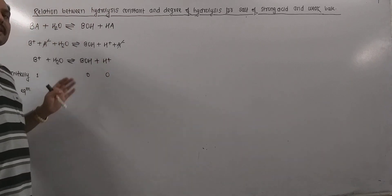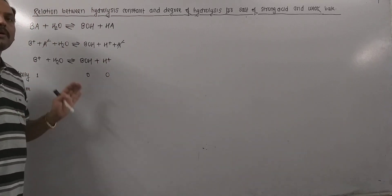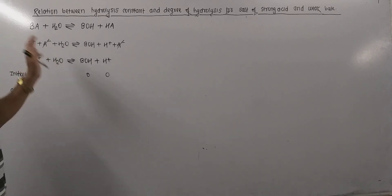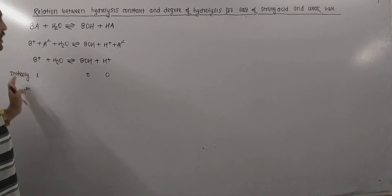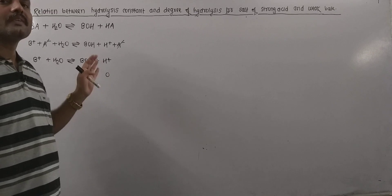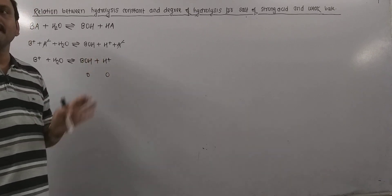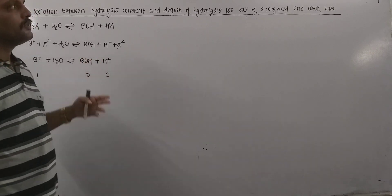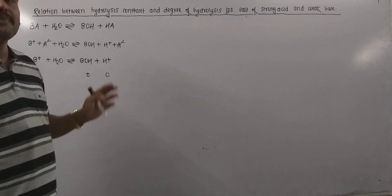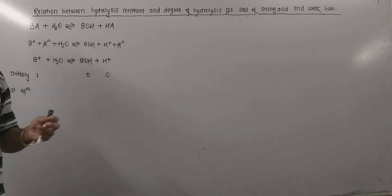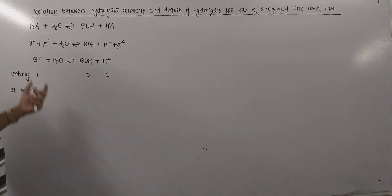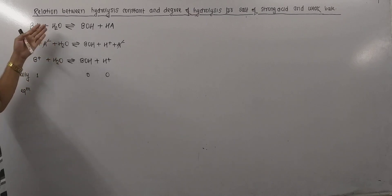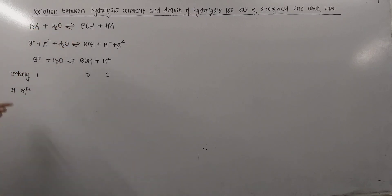Consider 1 mole of salt BA of strong acid and weak base dissolved in V liters of water. When this salt is dissolved, it is expected to show this type of reaction.